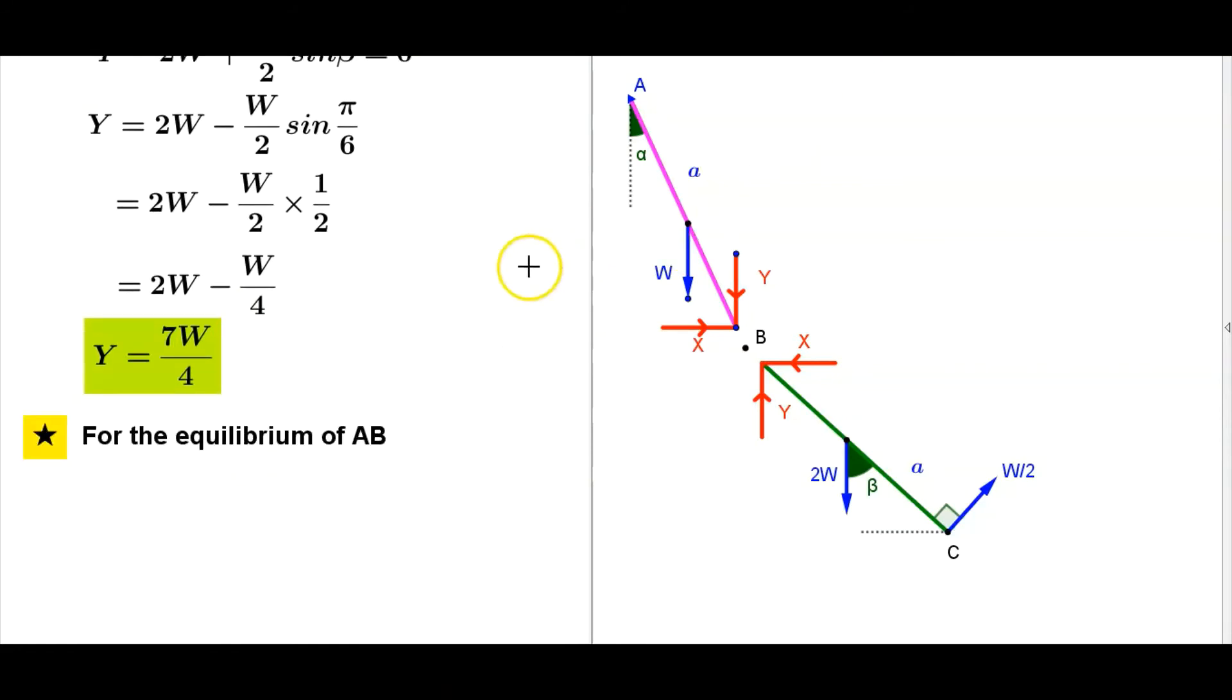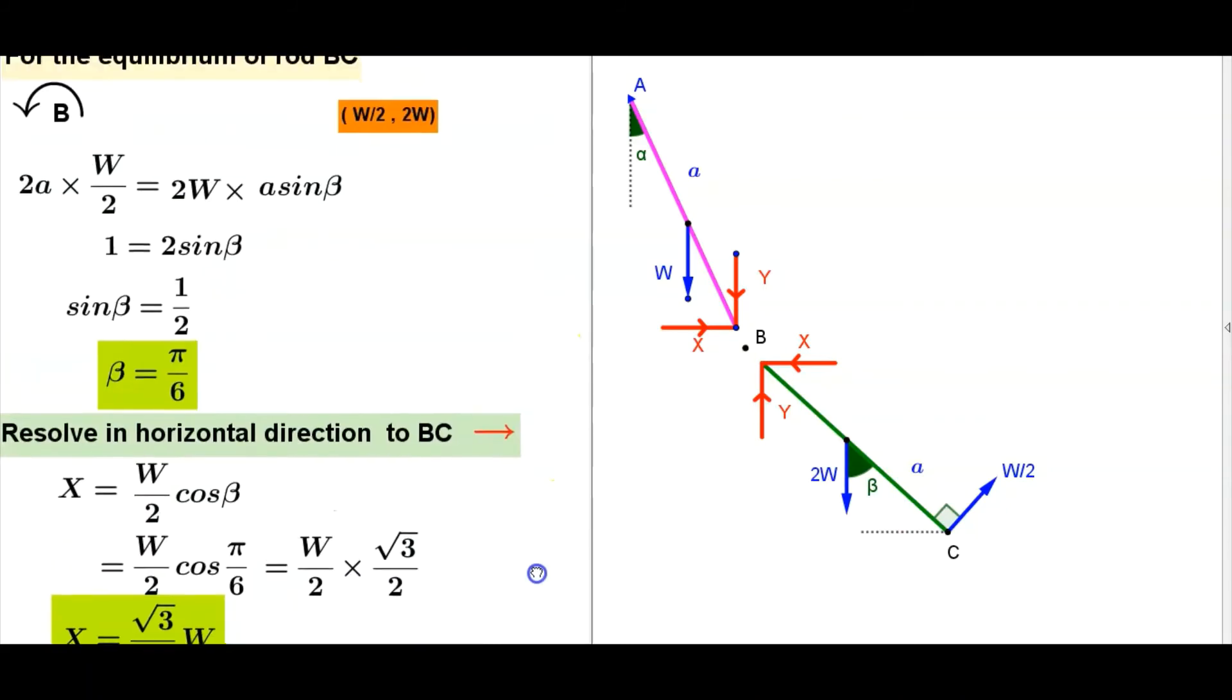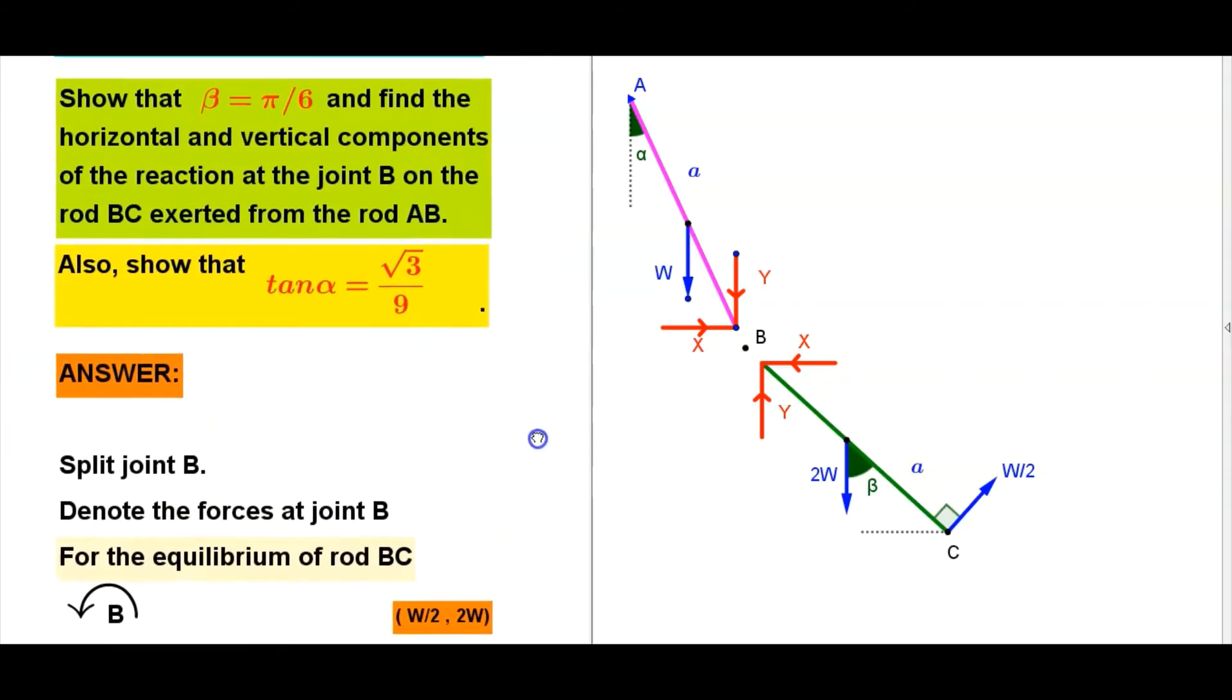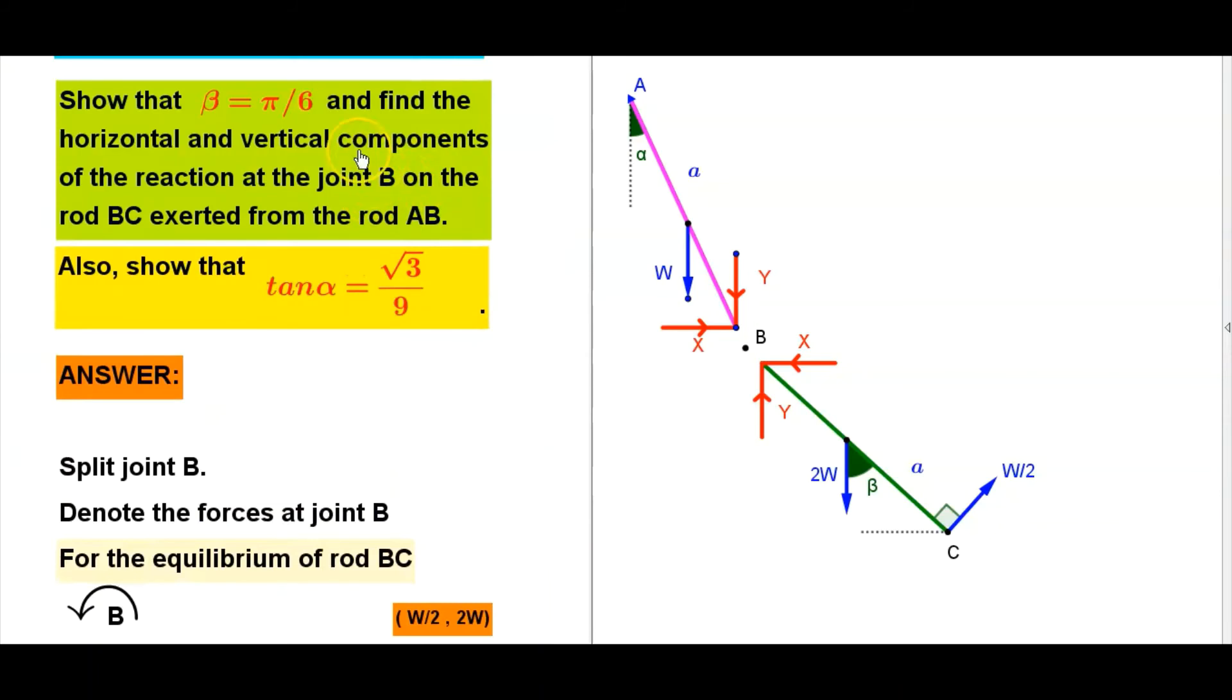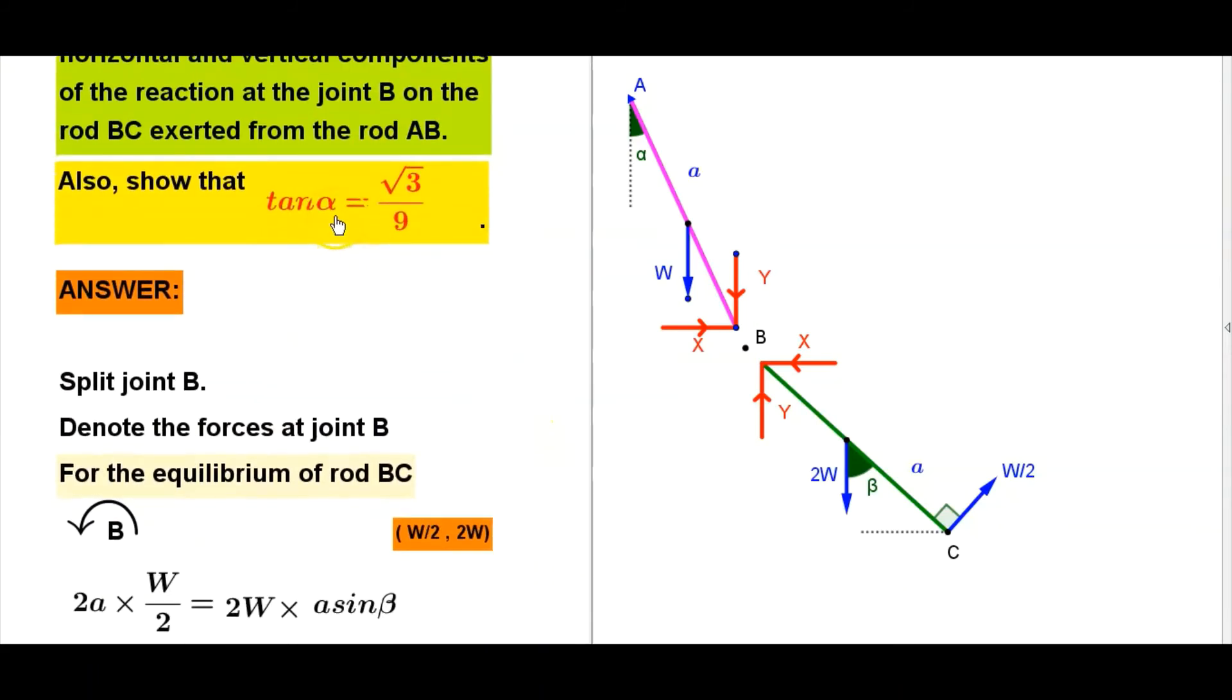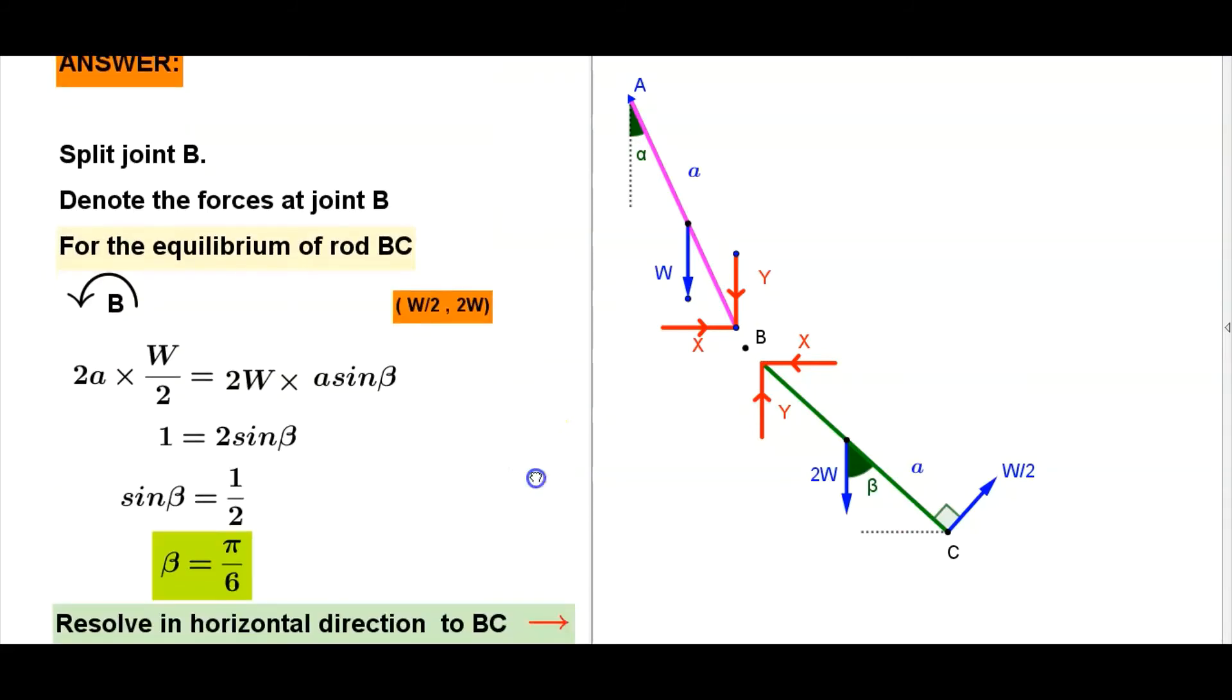Next part, this one we found. Next part, we want to show tan alpha equals root 3 over 9.